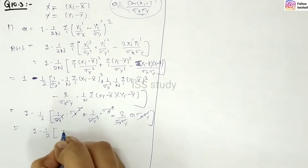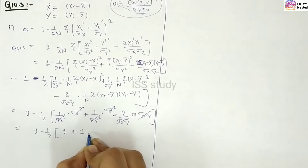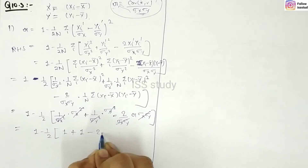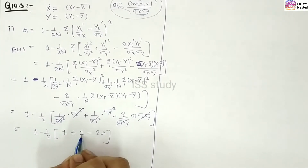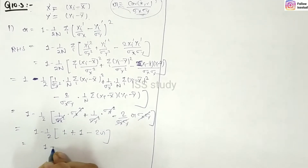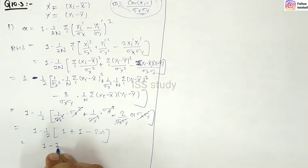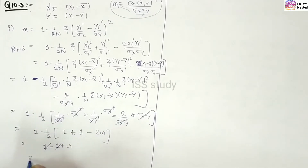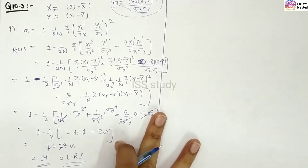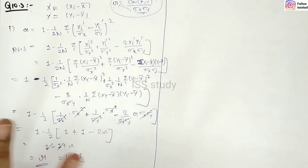What remains is: 1 minus 1/2 times (1 + 1 minus 2r). Since 1 plus 1 equals 2, we have 1 minus 1/2·(2 minus 2r). The 2 comes out and cancels, leaving 1 minus (1 minus r), which equals r. So our RHS equals LHS, and we can say this value equals r. This is proved.